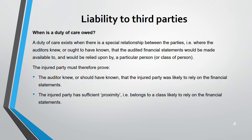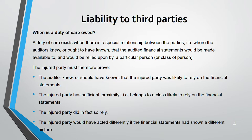Second, there must be sufficient proximity — that is, the injured party must belong to a class likely to rely on the financial statements and must not be too remote. For instance, a person overseas suffering loss may be considered too remote for the auditor to be liable. Third, the injured party must have actually relied on the auditor's financial statements and must have acted differently if the financial statements had shown a different picture.